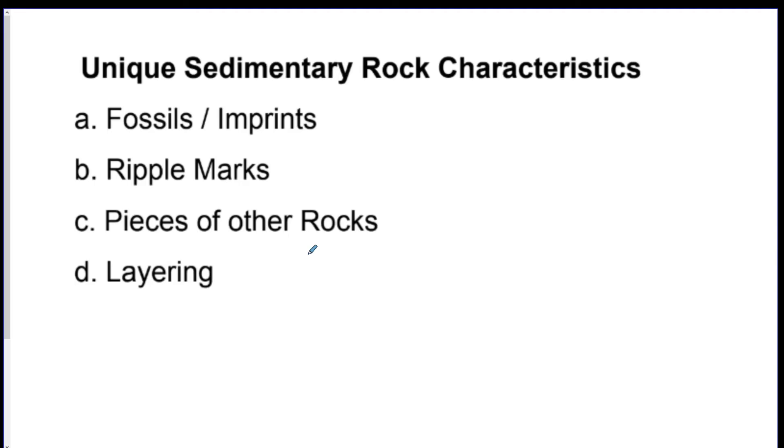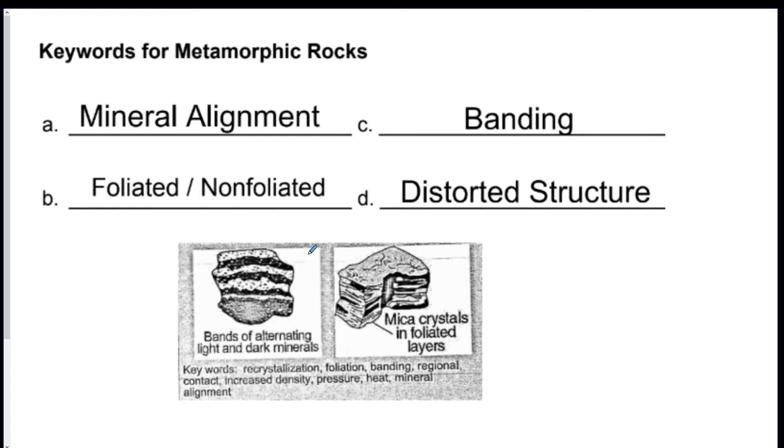These are the characteristics for sedimentary: fossils or imprints, ripple marks, pieces of other rocks, and layering. If you see these words, it's just sedimentary. These are the keywords for metamorphic: mineral alignment, banding, foliated, distorted. Distorted means like wavy lines. If you see these words, it's only metamorphic.